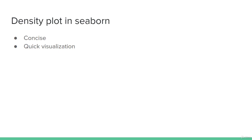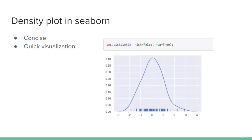The density plot in seaborn is even more concise and easier than pandas. To visualize a density plot in seaborn, you just call sns.distplot, specify the data values in x, set hist to False, and set rug to True. The rug function displays small parallel lines just above the axis at the bottom of the plot.